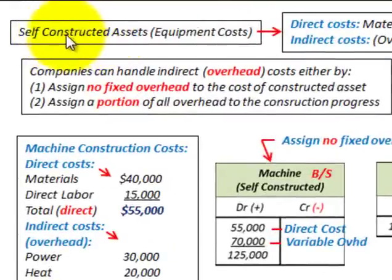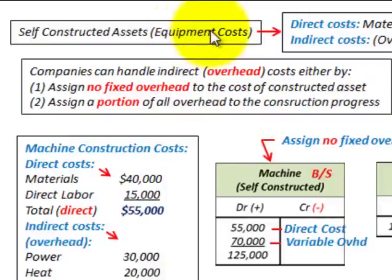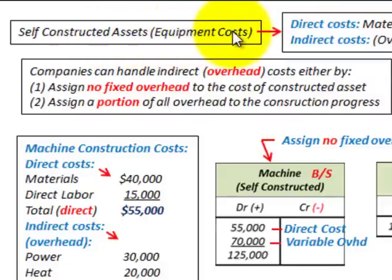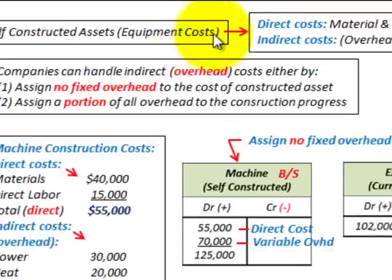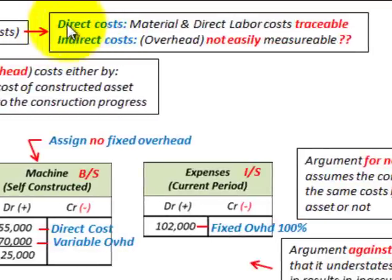What we're going to be looking at here is self-constructed assets that a company would have. They would be building their own piece of equipment, a piece of machinery, or they could even be building their own building. With these self-constructed assets, we have to deal with the costs of building the equipment, and we can identify them as direct costs and indirect costs.